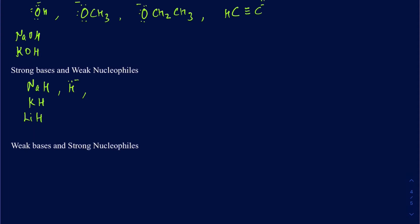The other examples are tert-butoxide — you have a negative charge on the oxygen, and it's so bulky it doesn't really like to act as a nucleophile unless you're dealing with methyl halides. You can have any metal cation like potassium or sodium with it. Other typical examples are LDA, DBU, and DBN. Those are the most commonly seen strong bases that are weak nucleophiles.